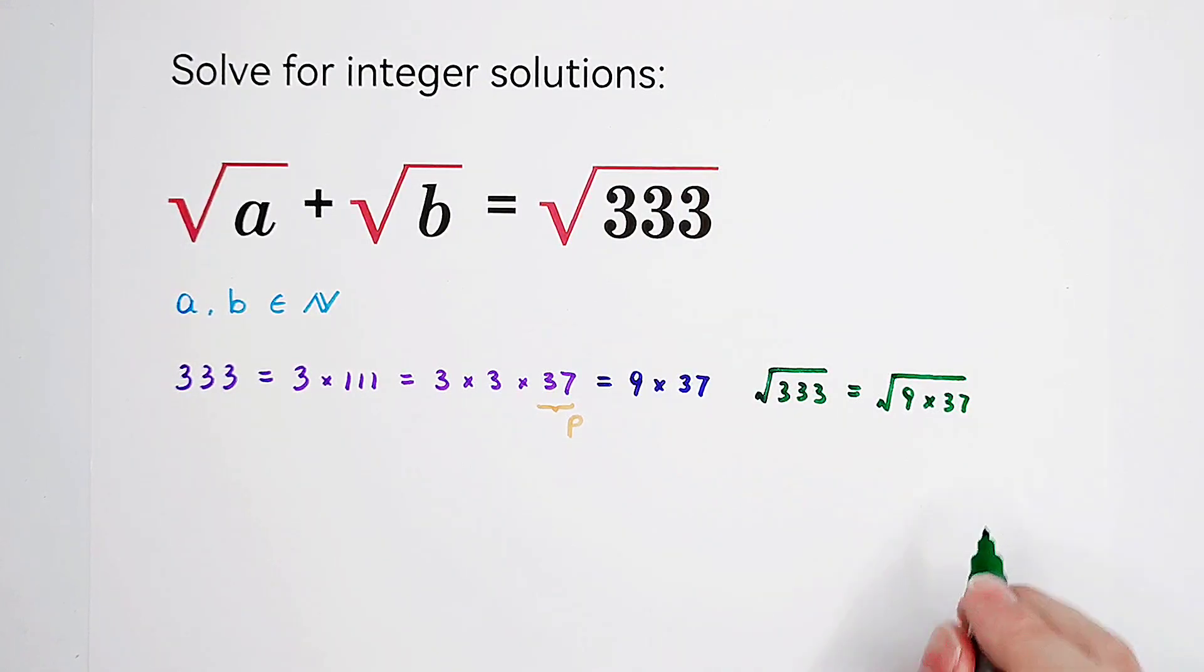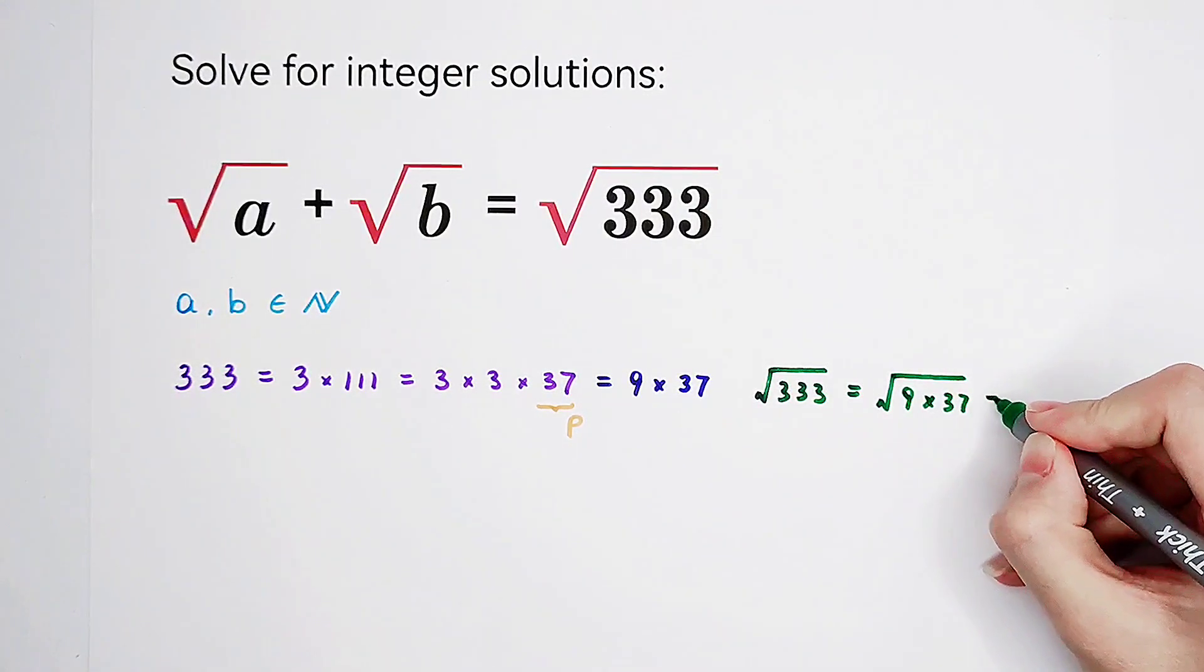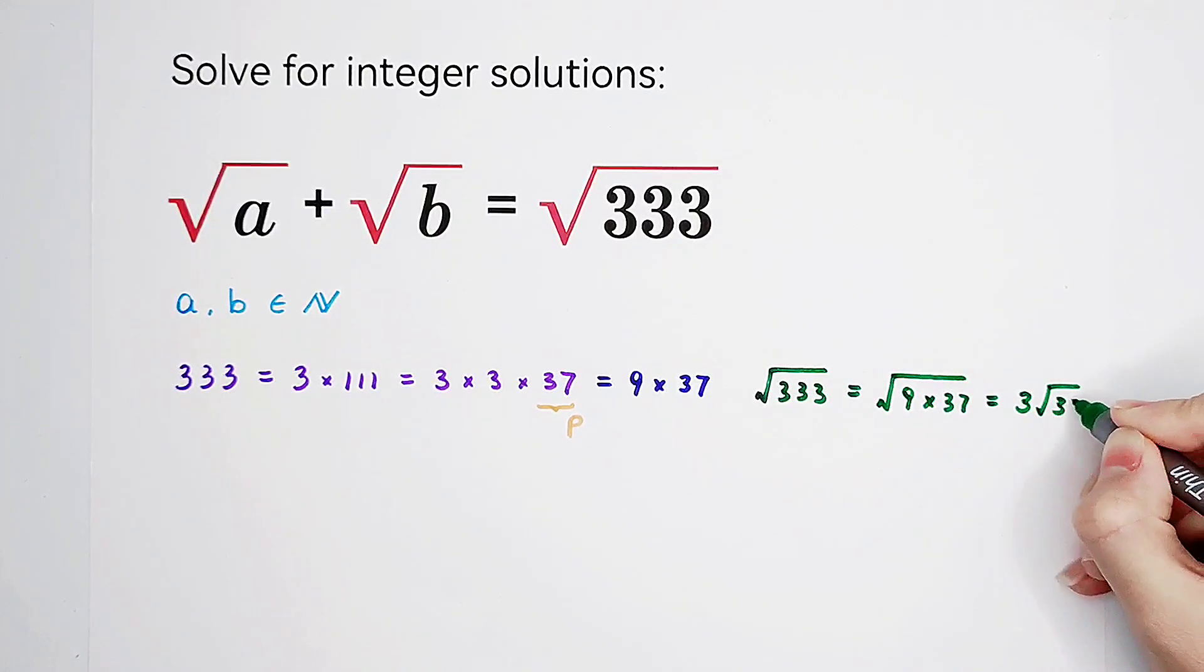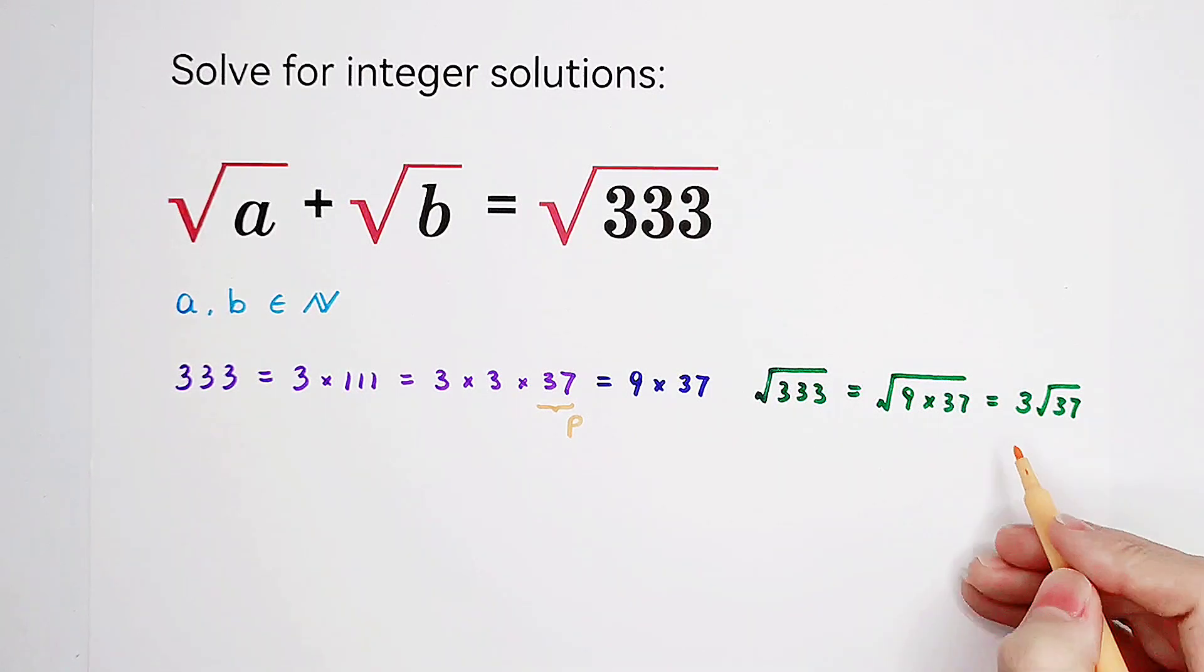So this is 3 root 37. It is 3 root 37. We've successfully rewritten the right side as this.